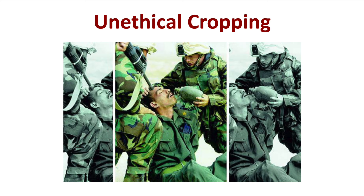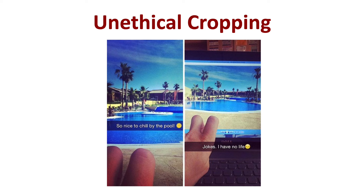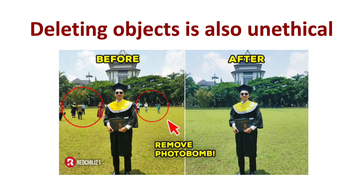Here you see examples of a misleading crop — those kinds of crops are unethical. It's also unethical to delete objects from photos. Even though your photo might look much better if you use a tool to delete a person or object that photobombed your perfect shot, you can't do that as a photojournalist. If you want to do that with your personal family photos on social media, that's different — that's fine. But as photojournalists, it's our job to depict reality as accurately as possible. Deleting objects from photos is unethical because we're not portraying reality as it actually was — we're manipulating the photo.